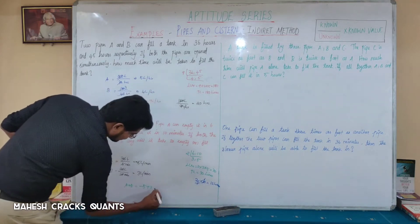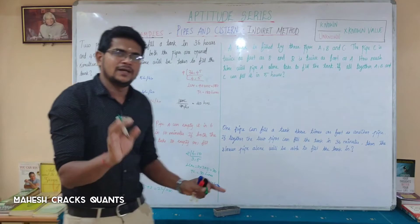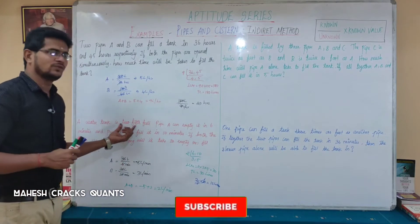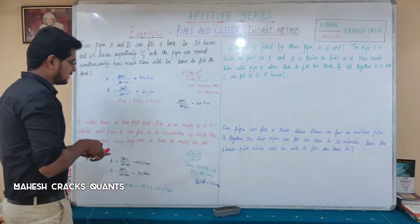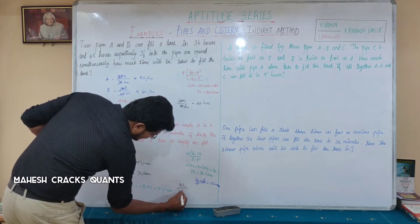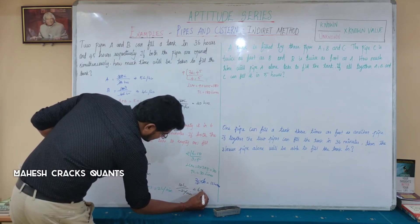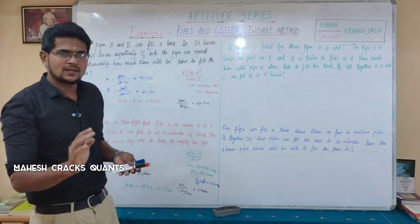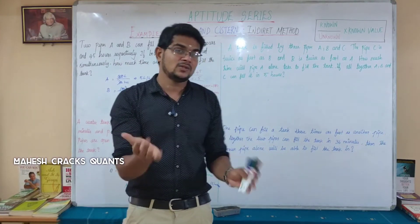With both pipes open together, the net rate is minus 2 litres per minute, meaning the tank empties. The tank already has 12 litres. Time to empty = 12 divided by 2 = 6 minutes. So when both pipes are open, the tank will be empty in 6 minutes.